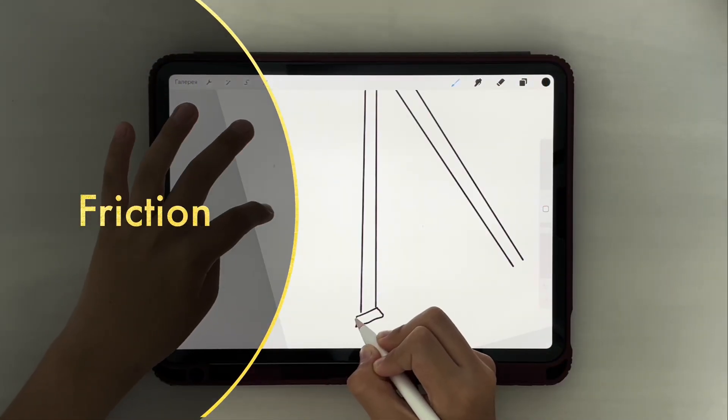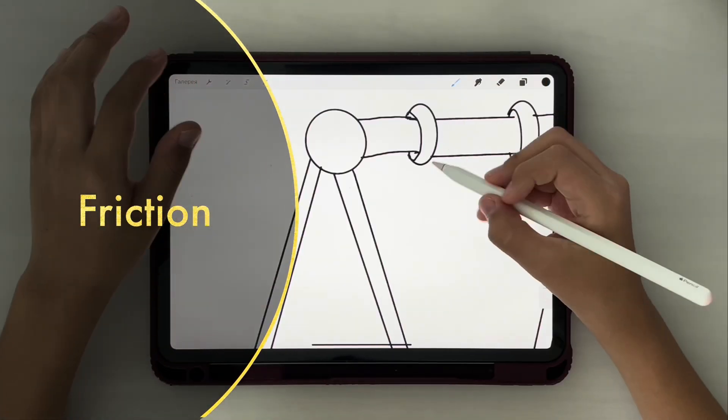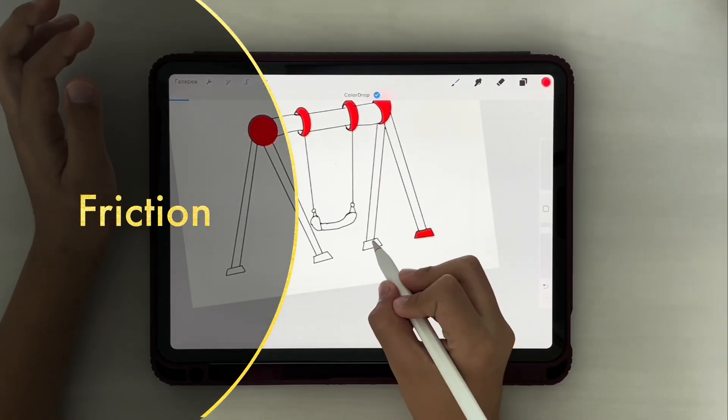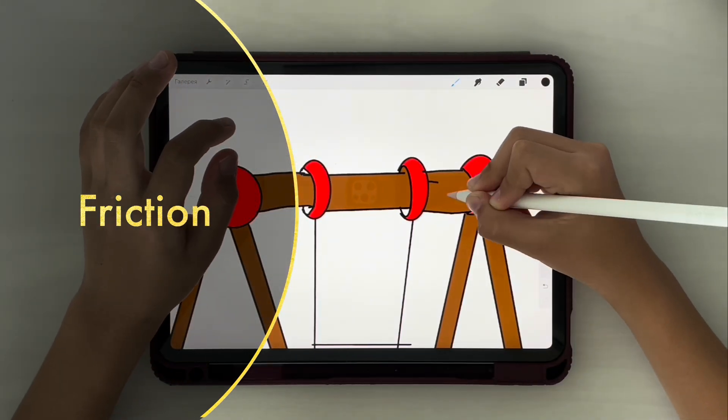The swing slows down and stops due to friction and air resistance. When you swing, friction between the swing and the ground creates a force that slows it down.